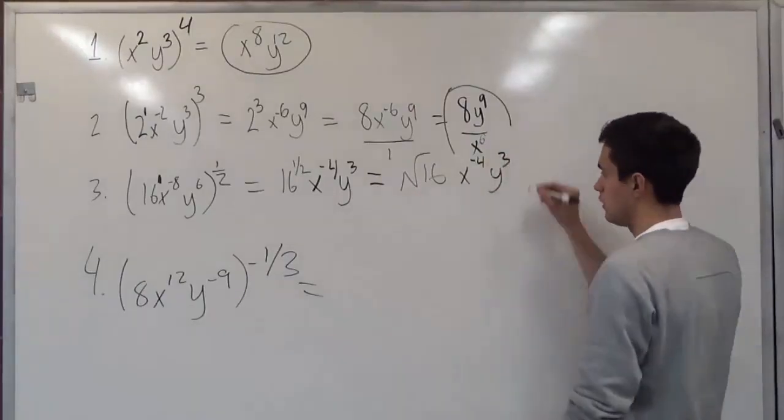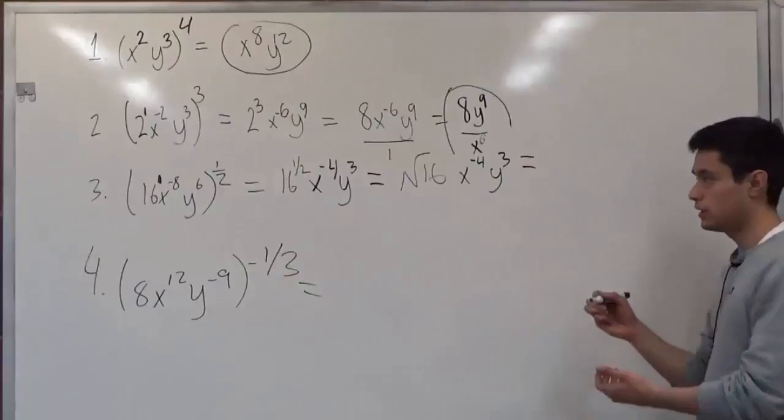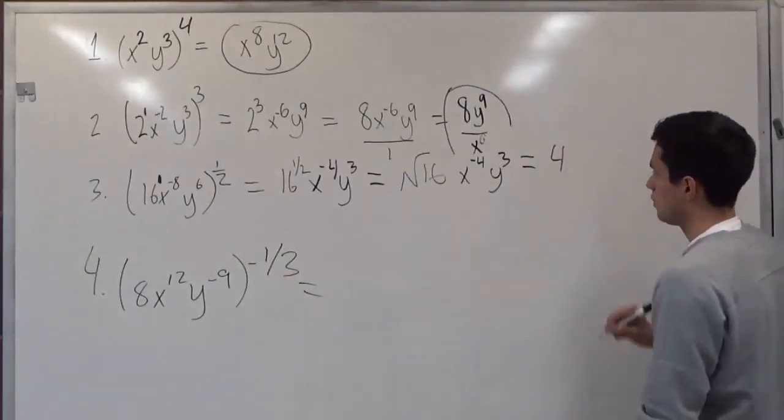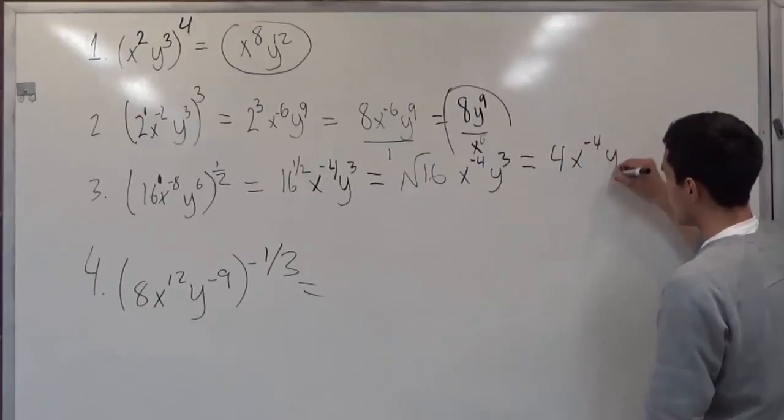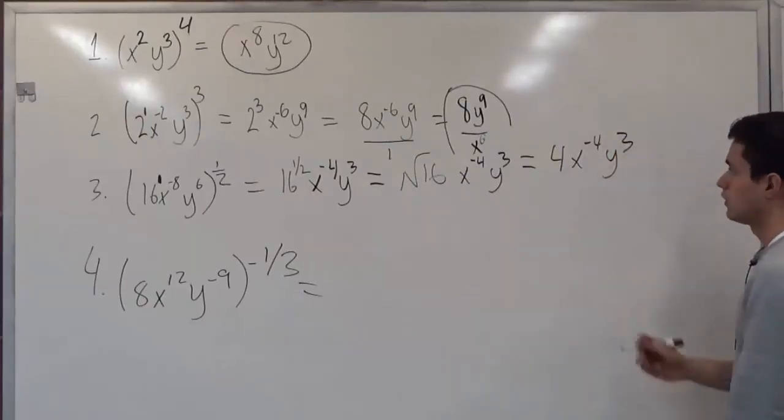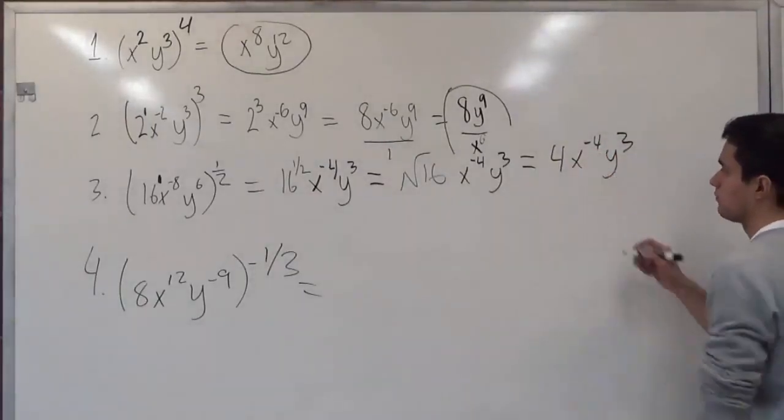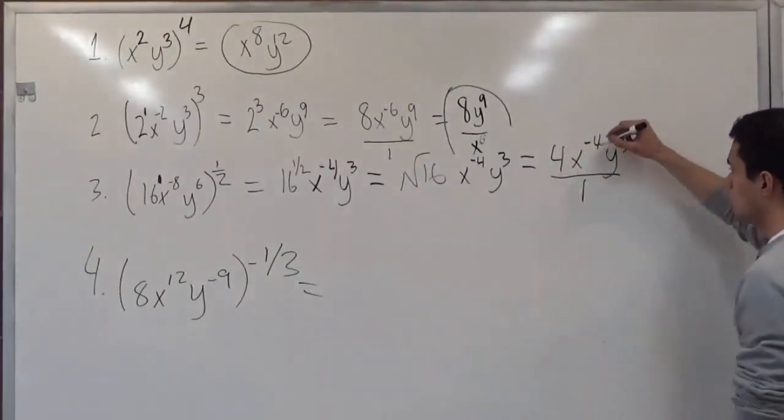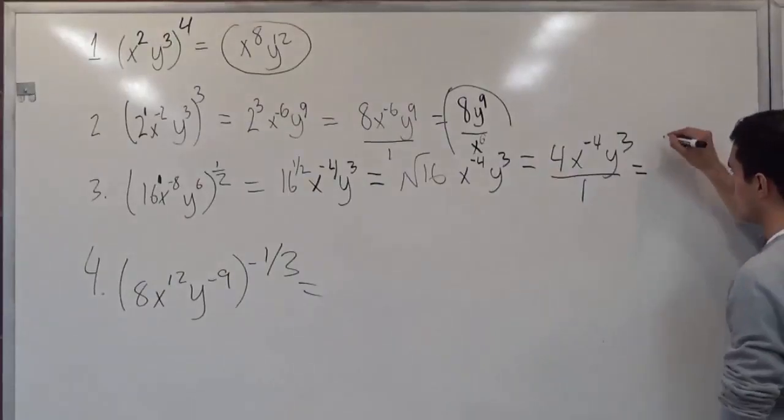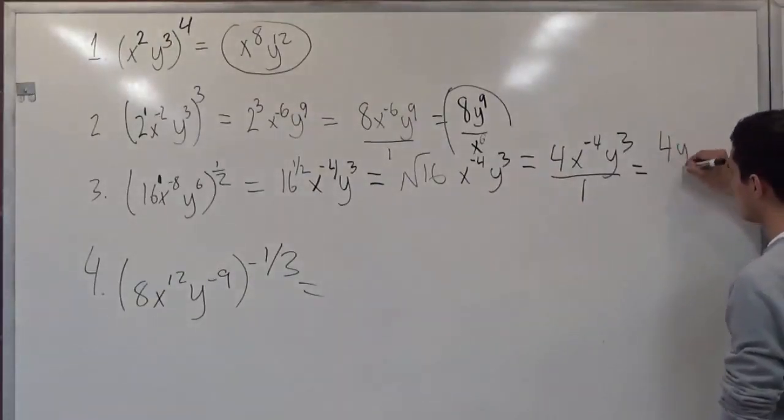So radical 16 can just be seen as 4. And then, yet again, we have our x to the negative 4 and y to the third. So now we see that negative, and we know that this is a whole. So in order to make this positive, we switch it, which then gives us 4y to the third over x to the fourth.